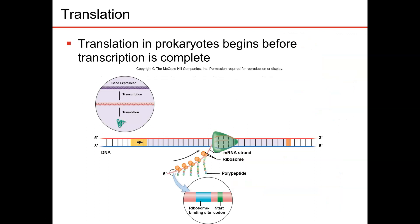Translation in prokaryotes can begin before transcription is complete, because everything is occurring within the cytoplasm. In eukaryotes, transcription occurs in the nucleus. Translation doesn't occur in the nucleus — it occurs in the cytoplasm — so you can't start translation until after transcription is complete.